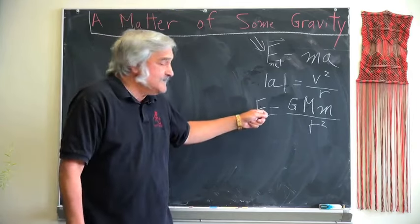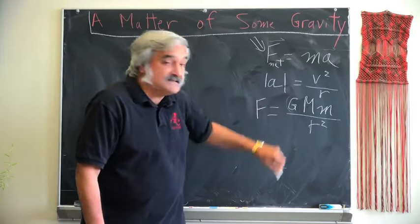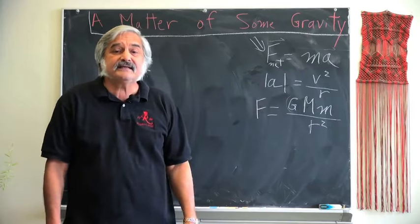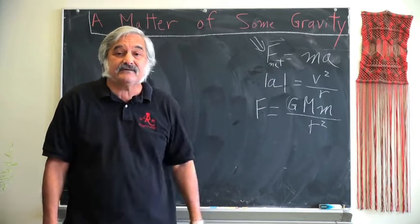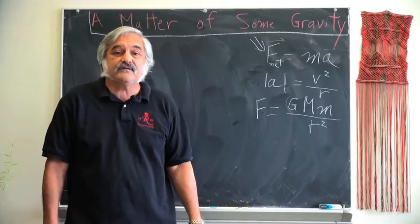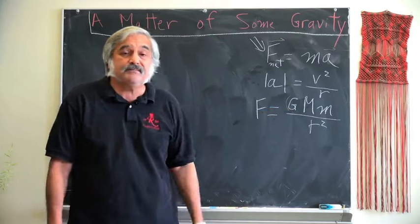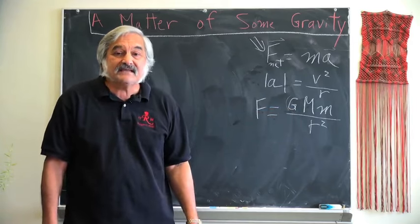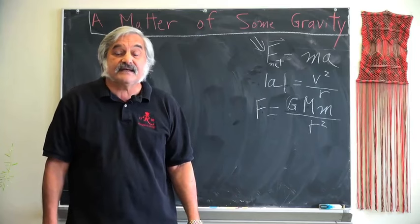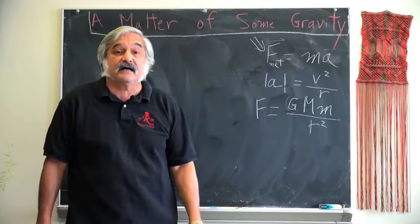This is simple, but profound. G is a constant that is surprisingly difficult to get accurately, because gravity turns out to be a very weak force. But we do know the value of G to about a tenth of one percent. Let's see what the consequences of our understanding of these ideas are.